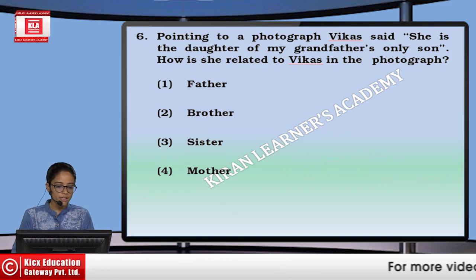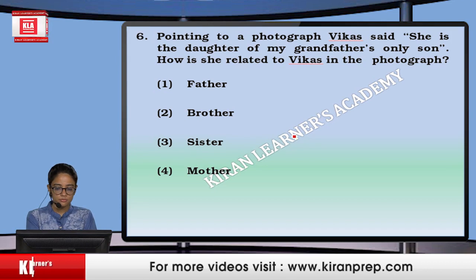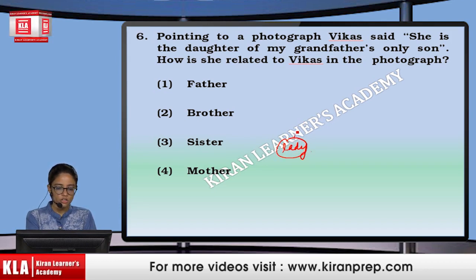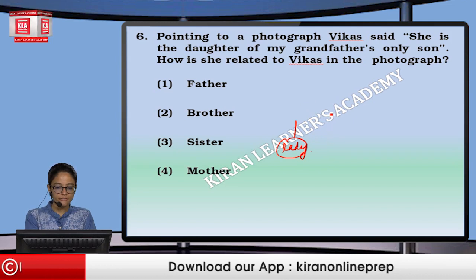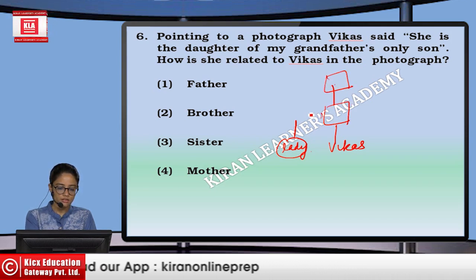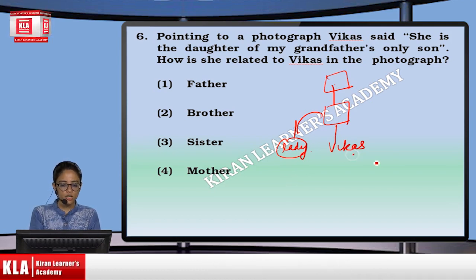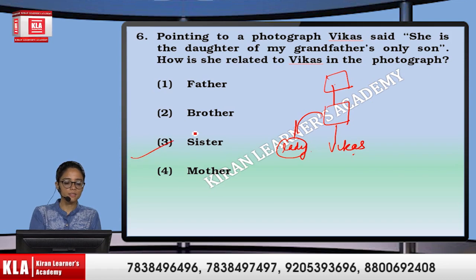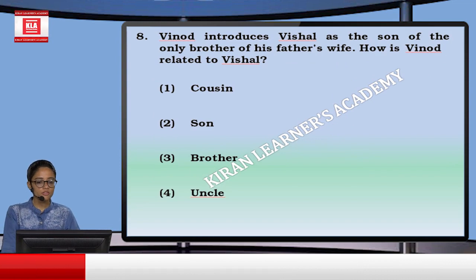Next: pointing to a photograph, Vikas said she is the daughter of my grandfather's only son. My grandfather's — that means Vikas's father's father. Grandfather's only son means Vikas's father. So that lady is sister of Vikas. How is she related to Vikas in the photograph? That means third option.